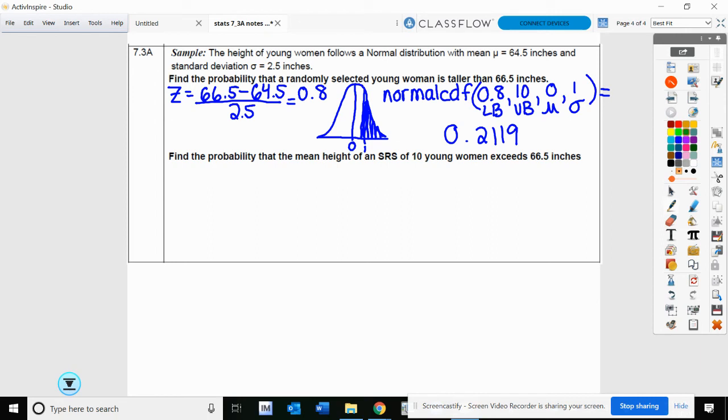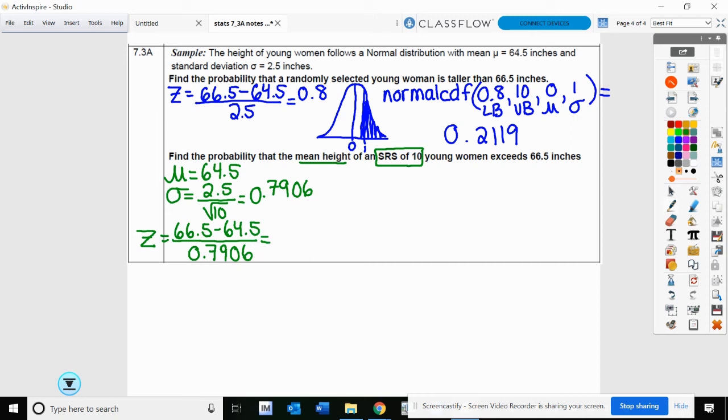Find the probability that the mean height of a simple random sample of size 10 exceeds 66.5. So again, the mean is going to be the same, 64.5. Our standard deviation should be 2.5 divided by that square root of 10, which is 0.7906. So then our z-score would be 66.5 minus 64.5 divided by the standard deviation of the sampling distribution.